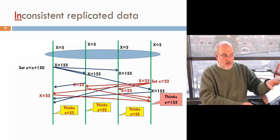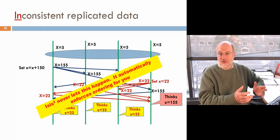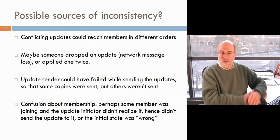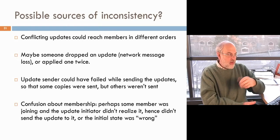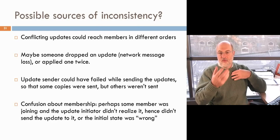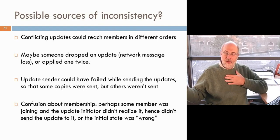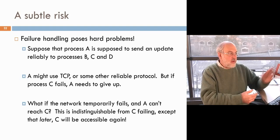Here's an example of inconsistency: one member ends up with X at 155 but the others have X at 22, because one did red-then-blue but the others did blue-then-red. ISIS won't let that happen — it automatically puts things in the correct order, unless you tell it not to use fixed ordering. Inconsistency can come from updates reaching members in different orders, a message getting dropped without retransmission, or the sender failing while sending updates. In that last case, you have to buffer and retransmit so that if I send you an update and crash before sending Harry an update, you turn around and send Harry the update. All of this is hidden inside the ISIS library.